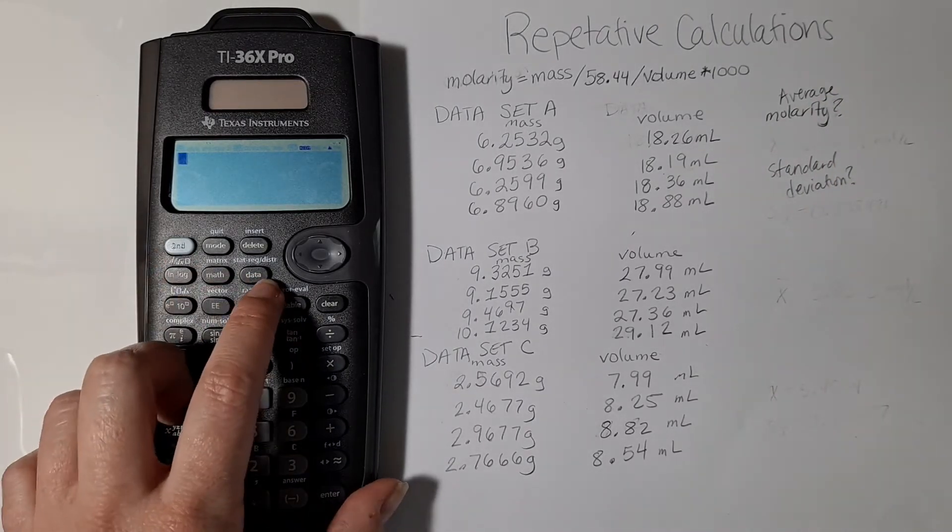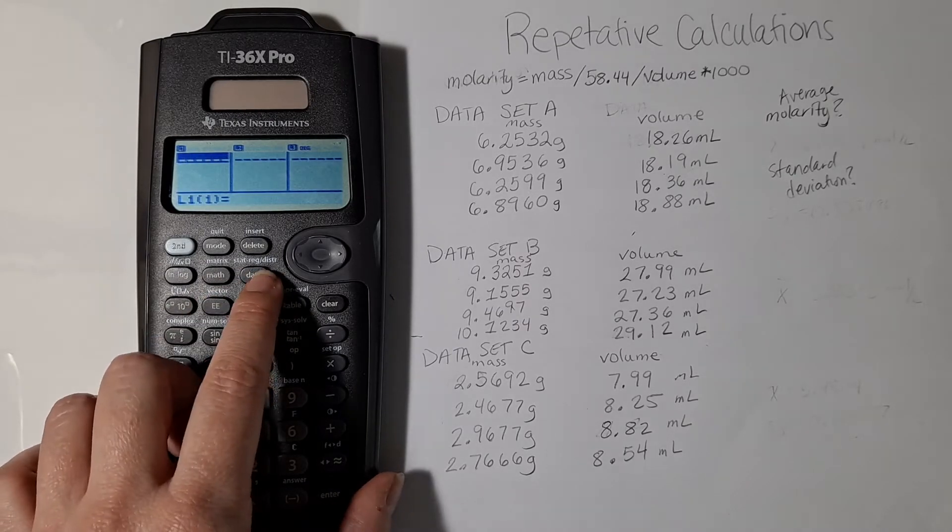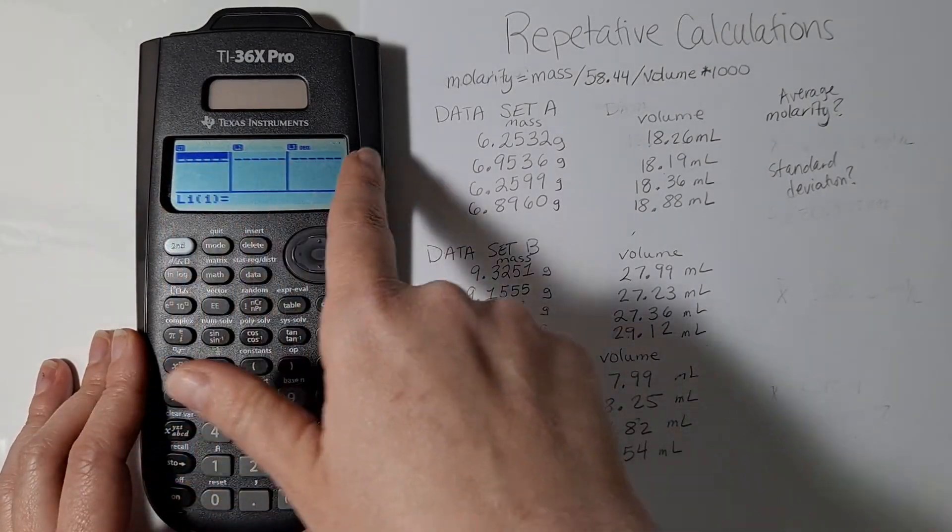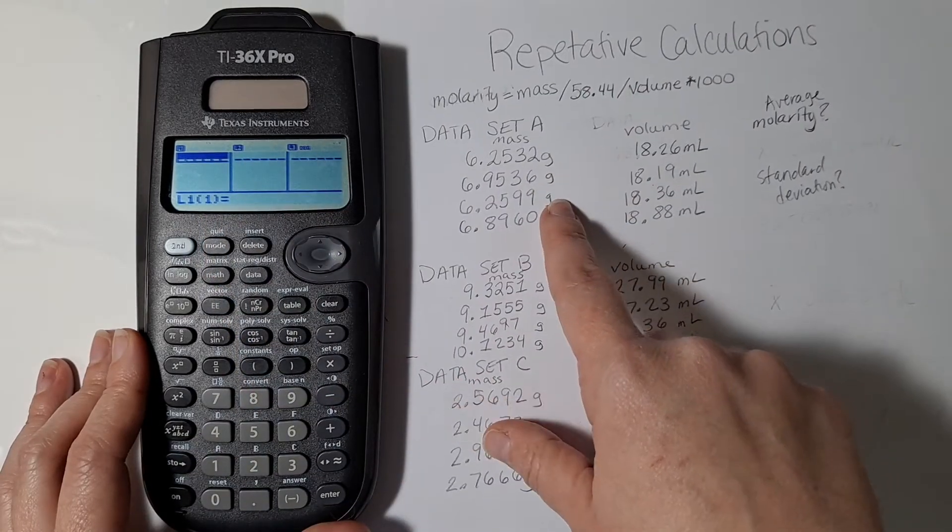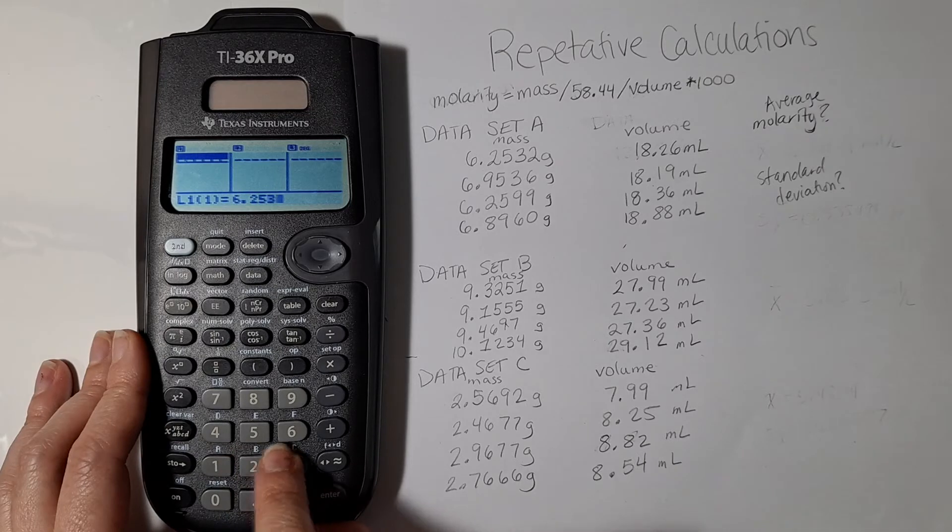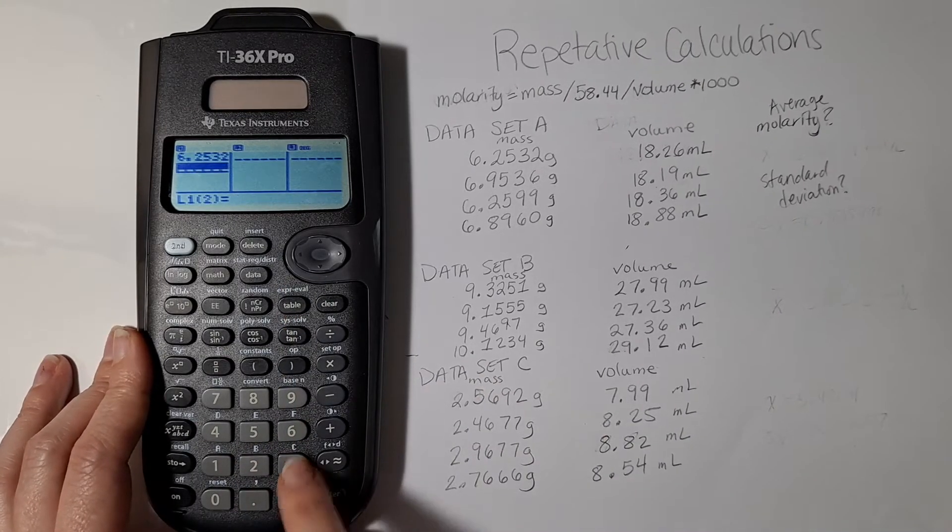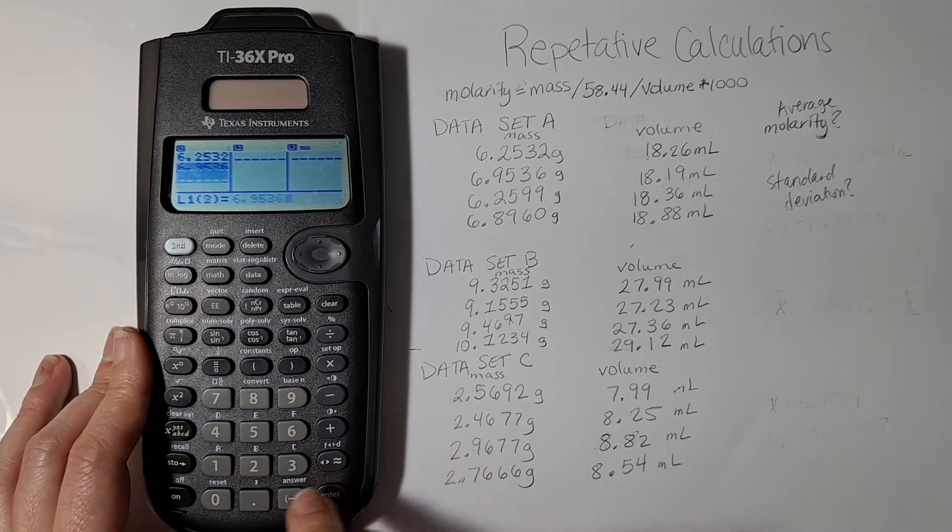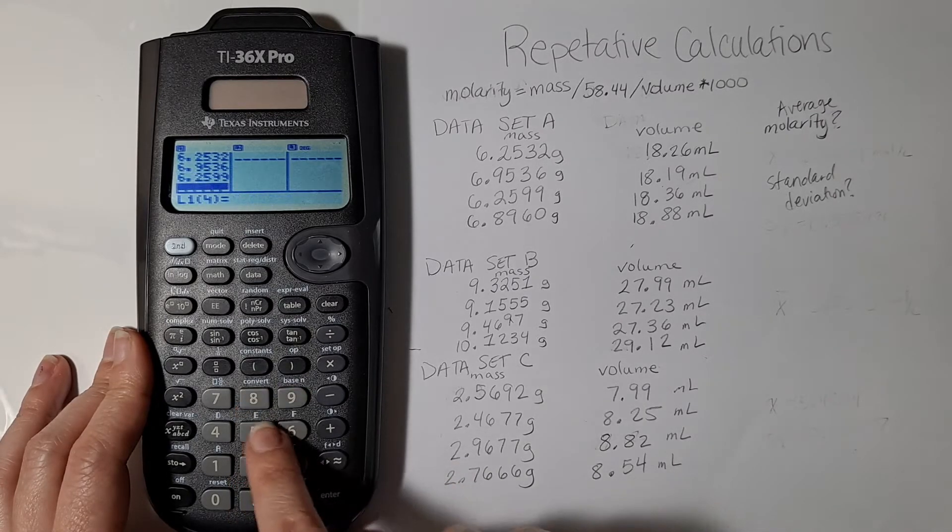So the first step is to go to the data tab. You push data and then you see what is like a miniature spreadsheet with three columns. In the first column I'm going to type my masses, so I can type in 6.2532, and then to get down I can hit enter, and then I can type in the second data point and then the third data point and then the fourth data point.